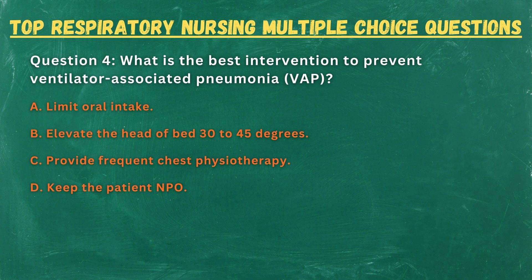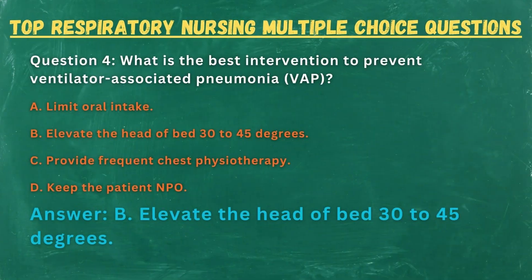Question 4. What is the best intervention to prevent ventilator-associated pneumonia (VAP)? A. Limit oral intake. B. Elevate the head of bed 30 to 45 degrees. C. Provide frequent chest physiotherapy. D. Keep the patient NPO. Answer: B. Elevate the head of bed 30 to 45 degrees.